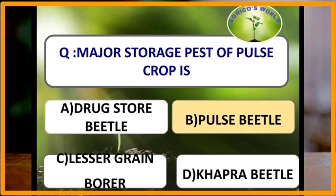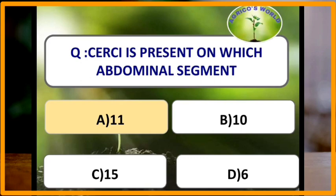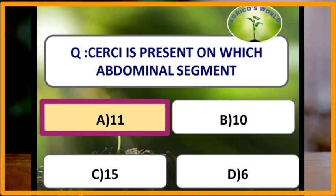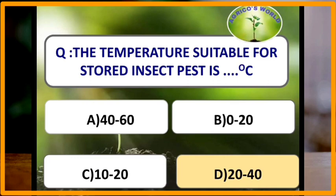The major storage pest of pulse crop is pulse beetle. Pulse beetle is a major storage pest of pulse crop. Cerci are present on the 11th abdominal segment of insects. The gall-forming family of pests is Cecidomyiidae. Cecidomyiidae is a gall-forming family of pests.